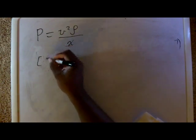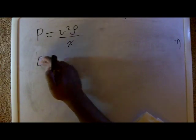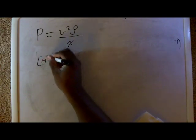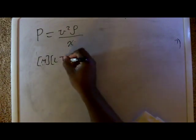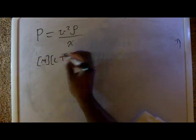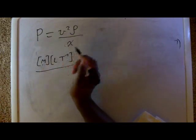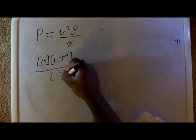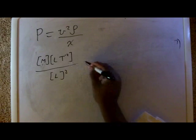So like I said before, force is mass times acceleration, so it's mass times acceleration over area. Area is two lengths, so it's a length squared.